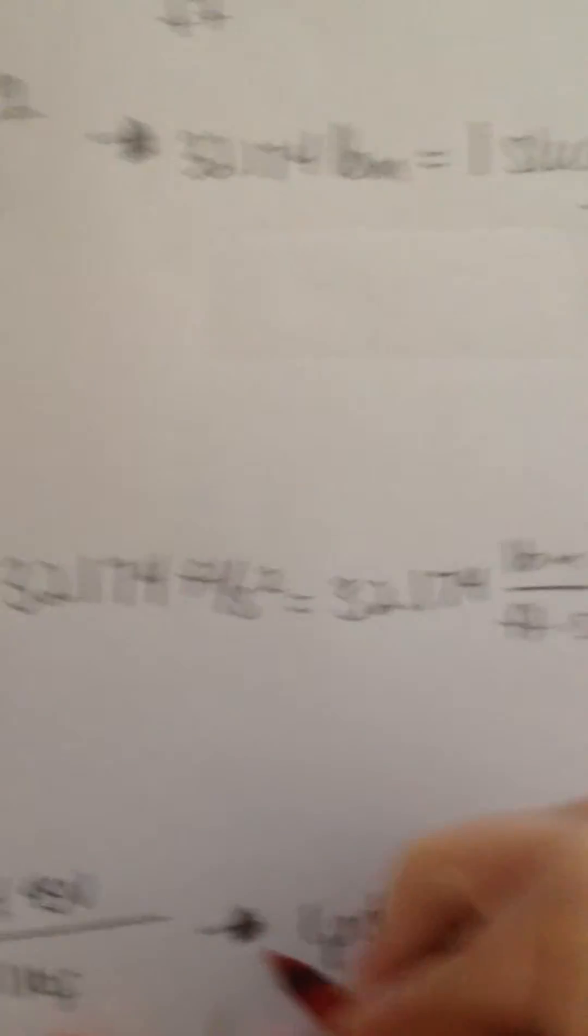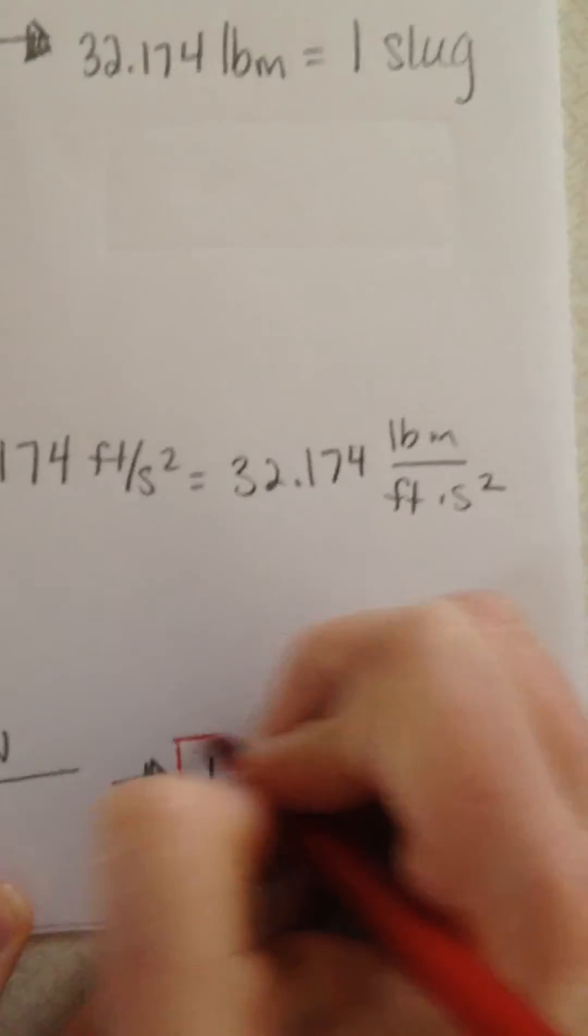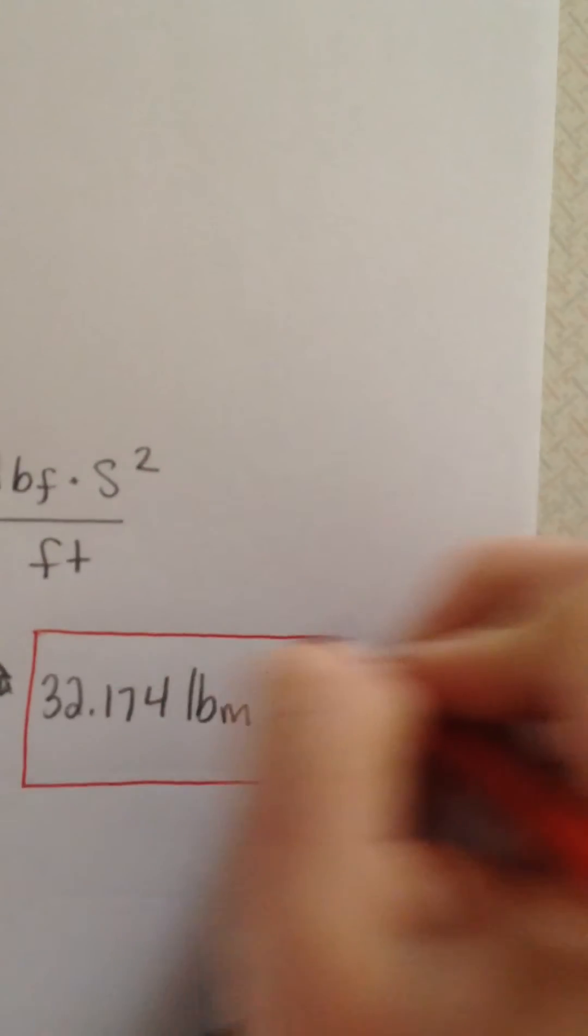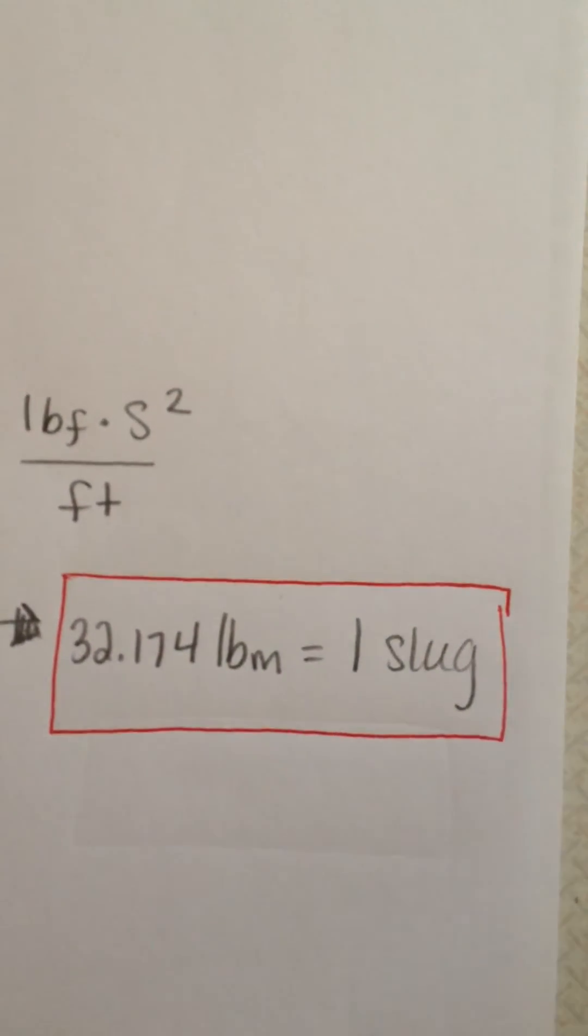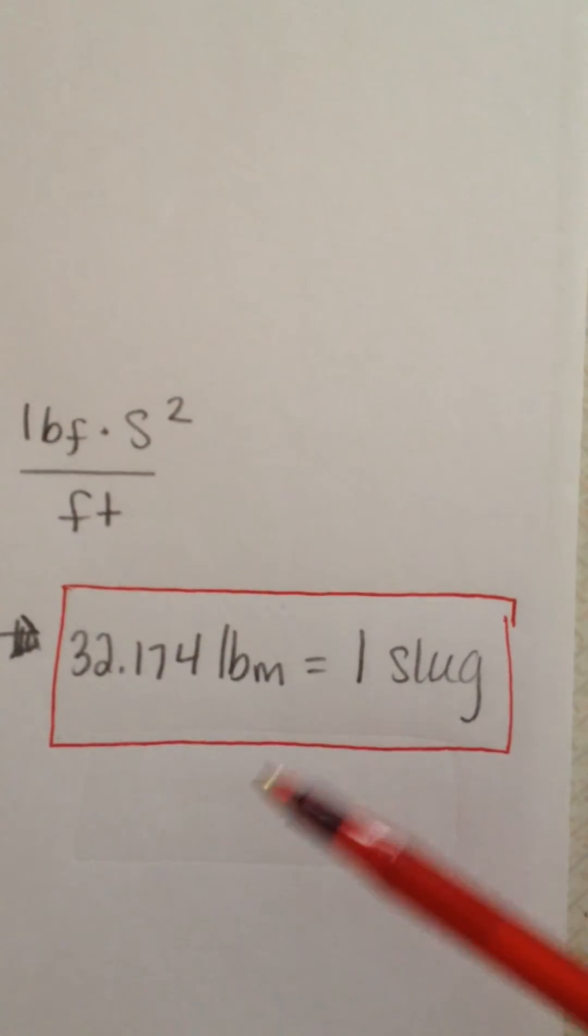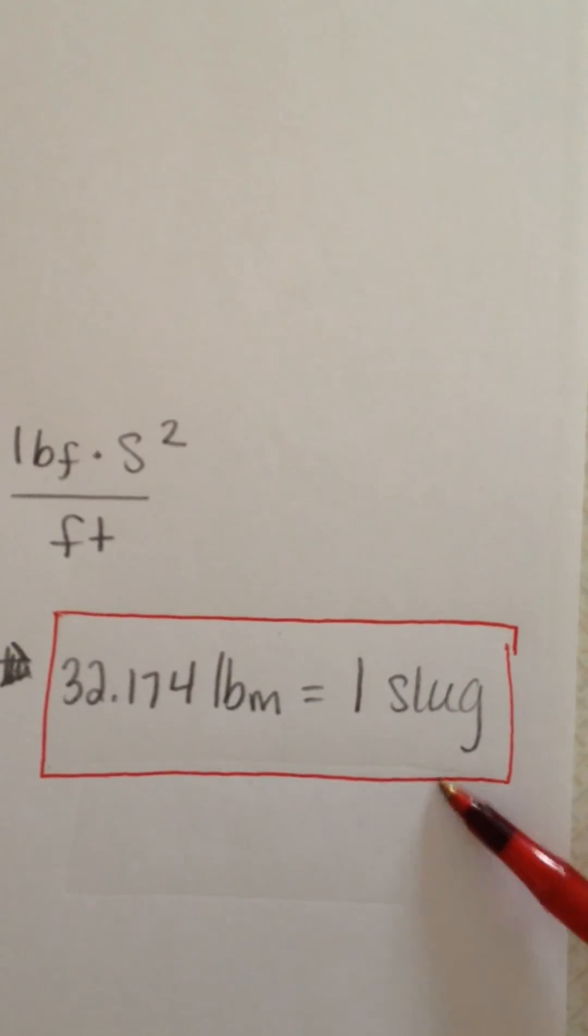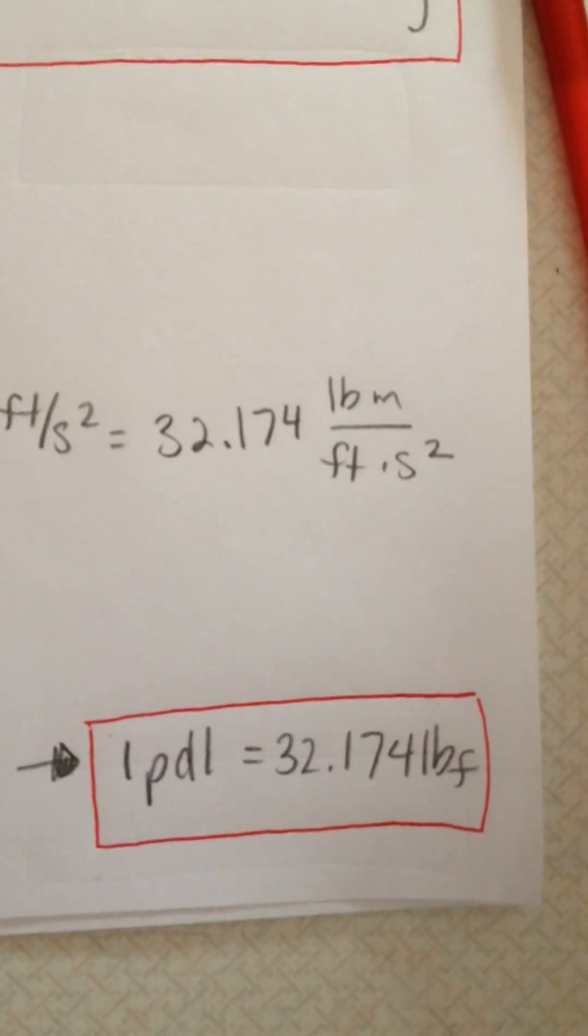This is important because we see a relationship between poundals and pound force and also between pound mass and slugs. It basically says that a pound mass is to a slug as a pound force is to a poundal. Hopefully that clears up some of the confusion between those four units.